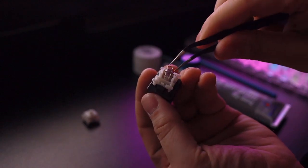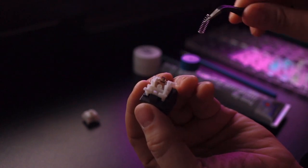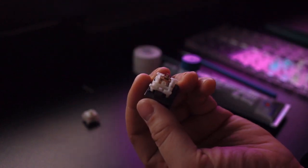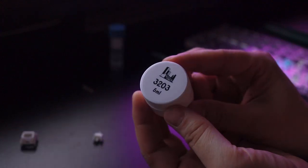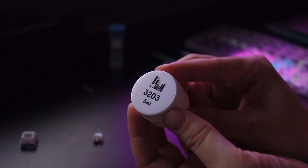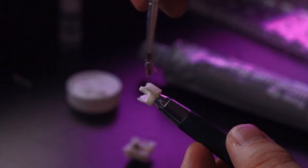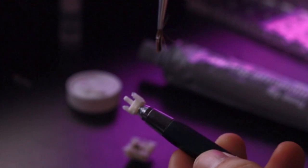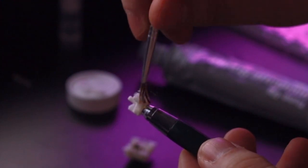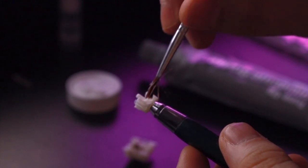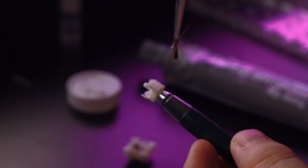I read online that you don't need to lube the Boba U4s, but I figured it wouldn't be a complete build if I didn't lube these switches. So I picked up some Tribosis 3203 because I read that this is great on tactile switches. One thing that I forgot to film while I was putting the switches back together are the 0.125 switch films that I used. I used the TX 0.125 clear switch films.